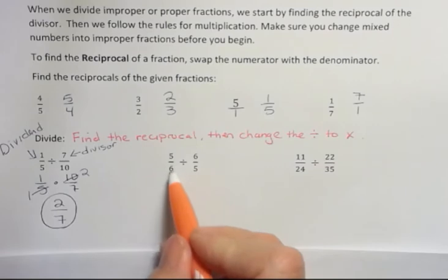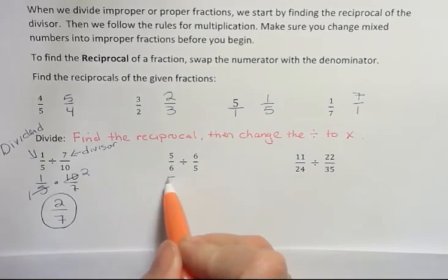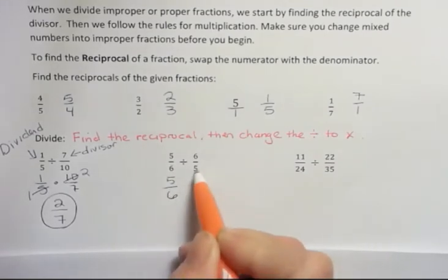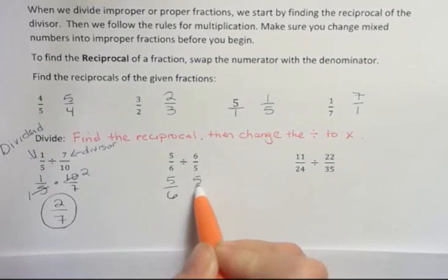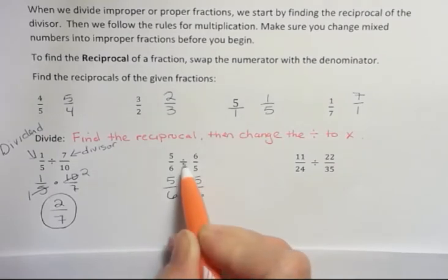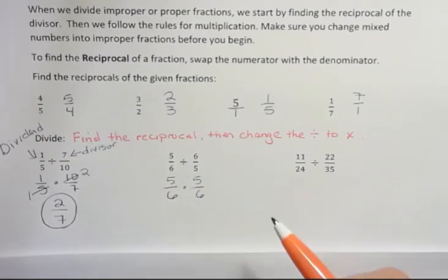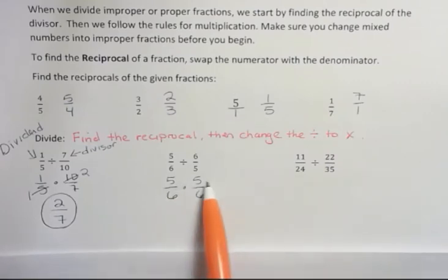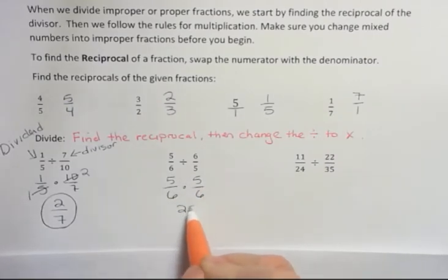For the second one, this one's a dividend. Don't flip it. This is the divisor. Do flip it. Once you flip, then you change your division symbol into multiplication. Multiplying straight across, I get 5 times 5 is 25, and 6 times 6 is 36.